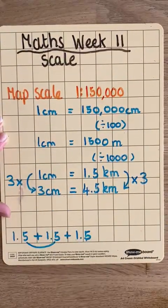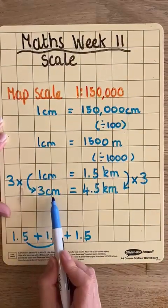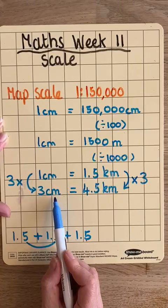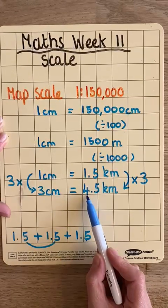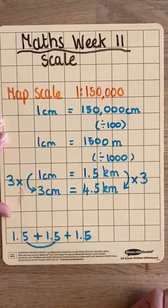So, that means, in reality, 3 centimetres on the map between the two towns is 4.5 kilometres.